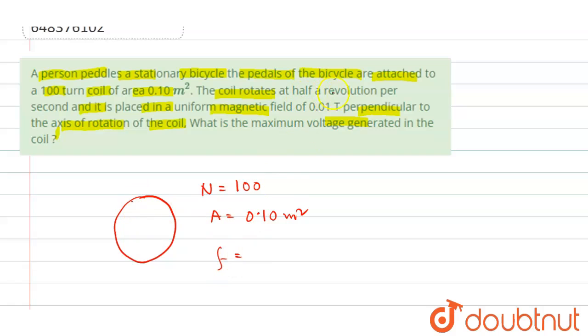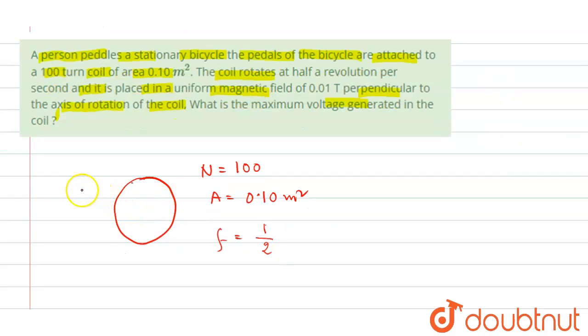That is, it is rotated to half of a revolution in one second, so it will be half. Now if this coil is placed in a uniform magnetic field...